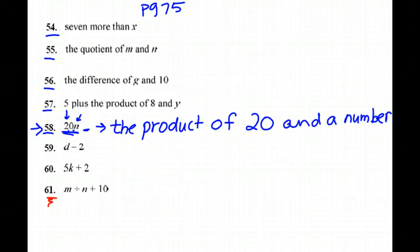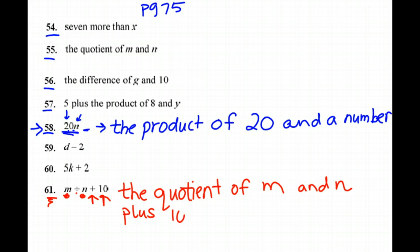So another one I want to do is here at 61, m divided by n plus 10. So we want to say the quotient of m and n, and then what are we doing? Oh, yeah, we're adding 10. So we want to say plus 10, and you're done.